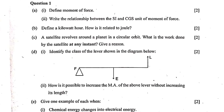Question 1b: Define a kilowatt hour and how is it related to joule? One kilowatt hour is the electrical energy consumed by an electrical appliance of power one kilowatt — also written as one thousand watts — when used for one hour. One kilowatt hour equals 3.6 × 10⁶ joules, or 36 × 10⁵ joules. It is asked in joule, so do not write 3.6 megajoules.